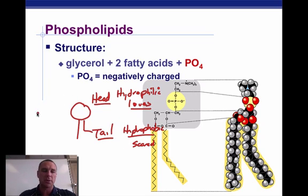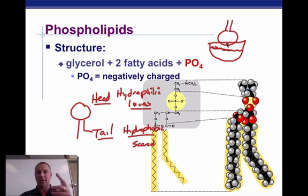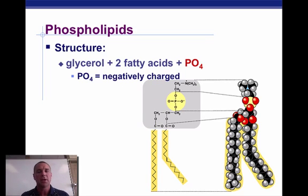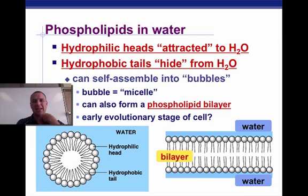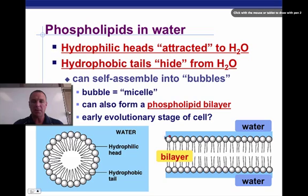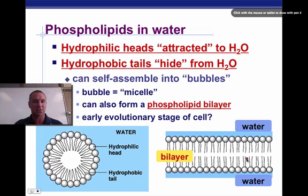So if you were to throw a phospholipid into a container of water, it would end up with the tail standing up — the head would go toward the water and the tail would be fearful of the water. This unique property gives the ability to make membranes. Our plasma membrane is a bilayer — two layers. The heads point outside the cell and the heads point inside the cell, both of which are mostly water, and the tails point inward, creating that layer that separates the inside from the outside. That's very important for the survival of living things.